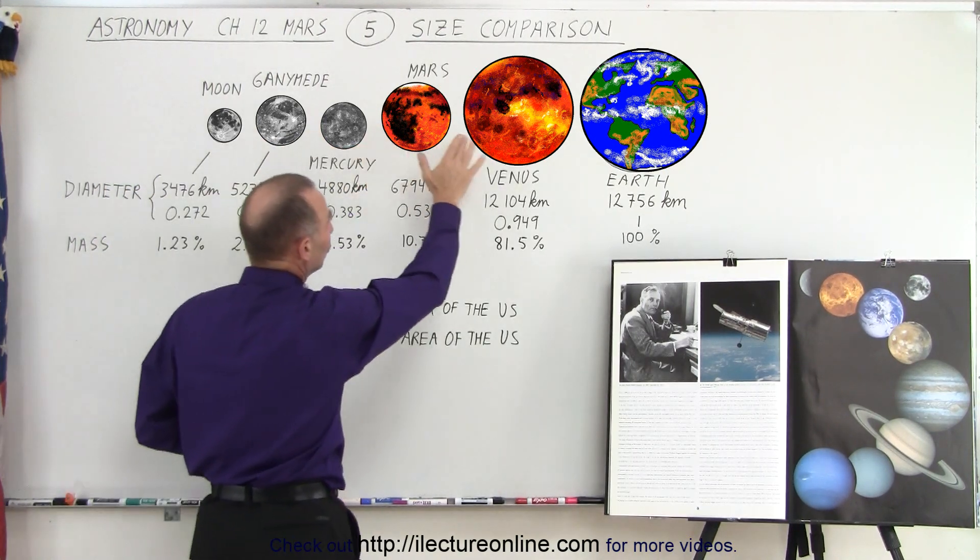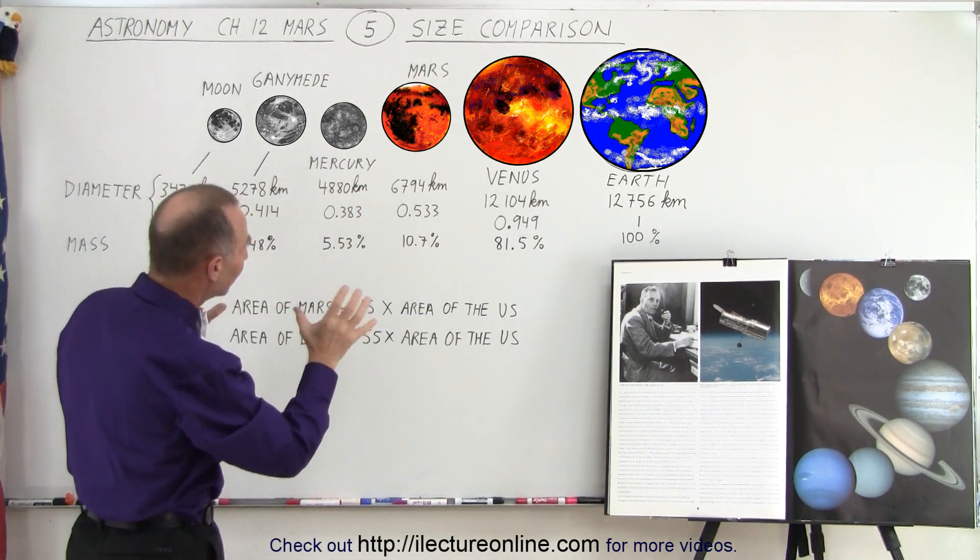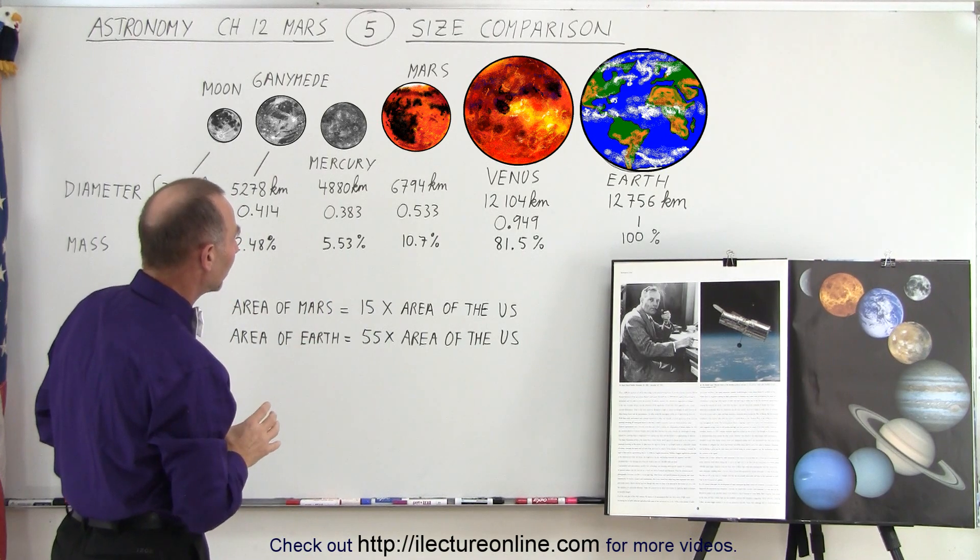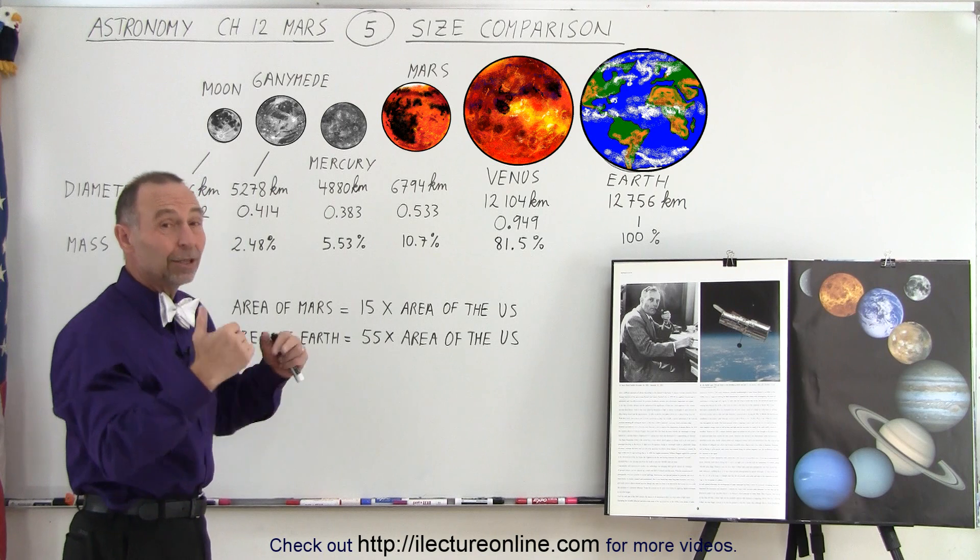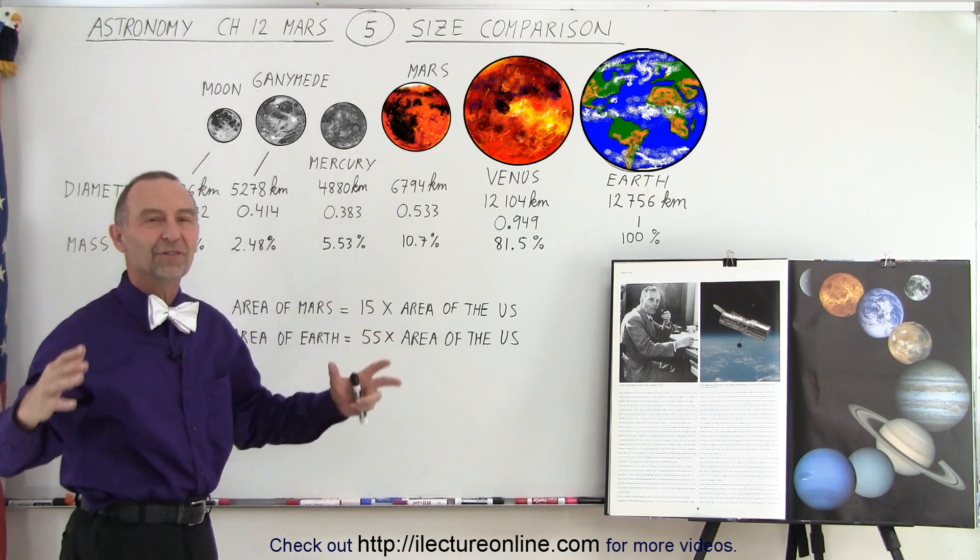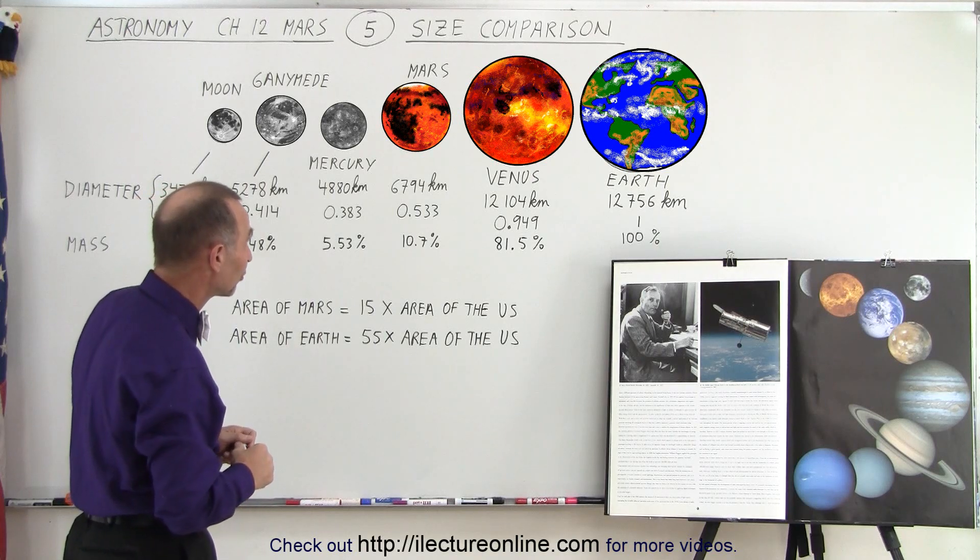And then we have the other two larger terrestrial planets, Venus and Earth. So it gives you a relative view of how large these are. So even though Mars is a lot smaller than Earth, when we land on Mars it's still enormous in size. There's a lot to be explored on Mars and we'll see a lot of those geological features.